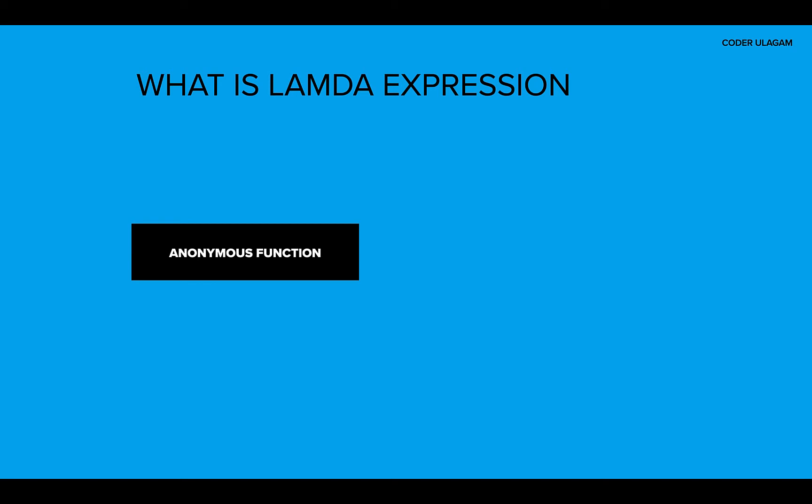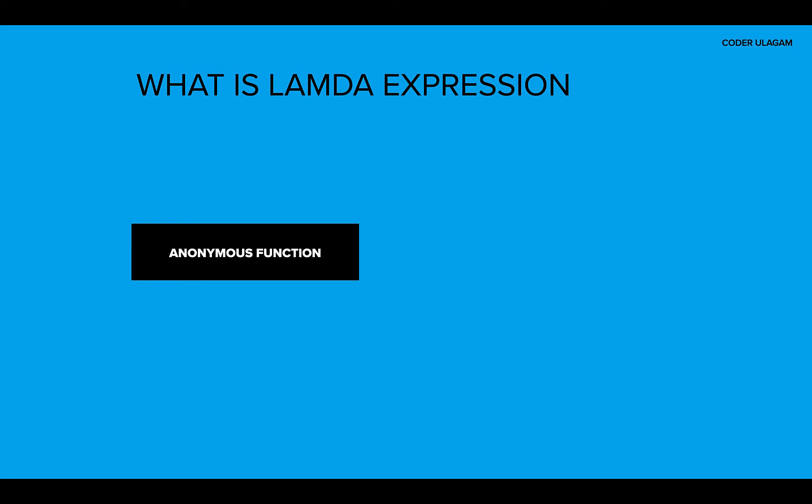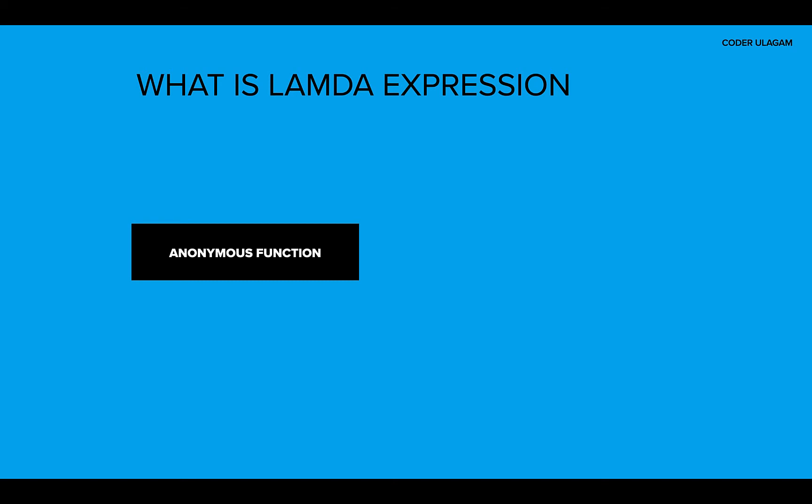It's not object-oriented style programming — you implement a function using just a lambda expression. It saves a lot of boilerplate code and is much more readable. An anonymous class is without a class name, and an anonymous function is a function without a function name or method name.